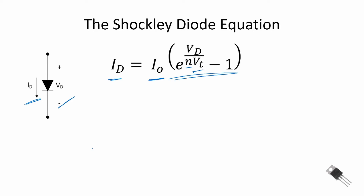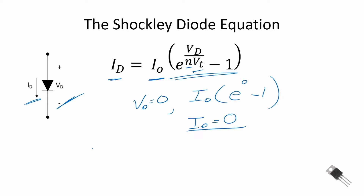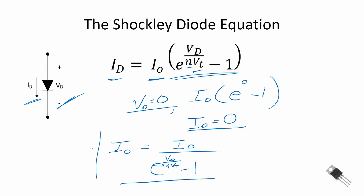A couple of things to note: if the voltage across the diode is zero (V_d = 0), then we have I_0 times (e^0 − 1), and since e^0 = 1 the current through the diode is zero. We can also solve for the reverse saturation current I_0: it equals the current through the diode divided by (e raised to V_d divided by n·V_T, minus one). We'll use this equation later in the video to estimate I_0.